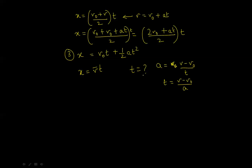And, what we are going to do is also switch for V bar from before. So, X is equal to V bar, which was V0 plus V over 2. And, then T from here is V minus V0 over A. And, from the mathematical identity, you know that A plus B multiplied by A minus B is A squared minus B squared. So, this is equal to V squared minus V0 squared over 2A.